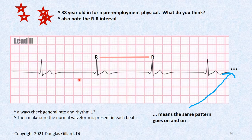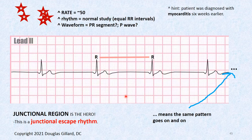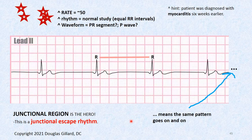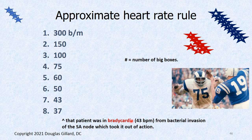Where's the P wave? It should be here, and there should be a PR segment — but it's not like that. There it is — that is an inverted P wave. Heart rate was 50, the rhythm was steady, and we have an inverted P wave. This is actually a junctional escape rhythm. The patient had a myocarditis six weeks earlier — the infection got into his SA node and it wasn't working. He had no idea.